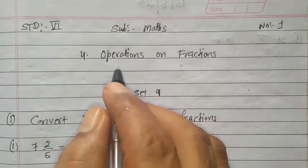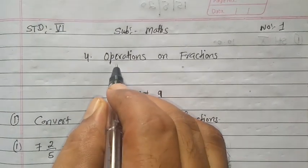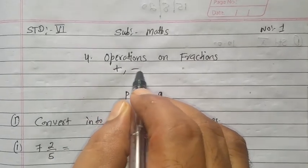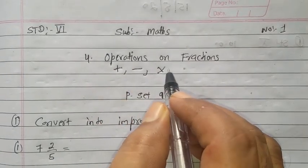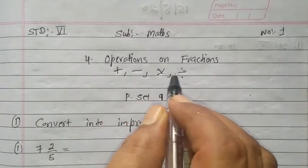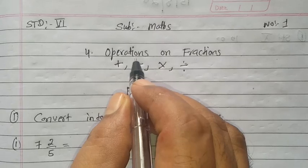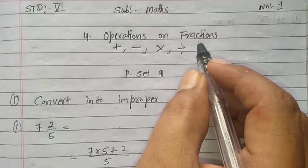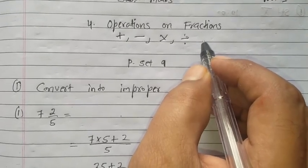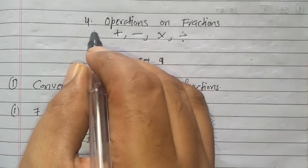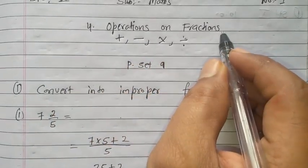Now come to the first operations. Operations means what? We are doing addition, subtraction, multiplication, as well as division. These four things are known as operations on fractions. In fractions, you know very well, there is a numerator and a denominator. So we are going to learn Chapter Number 4, Operations on Fractions.